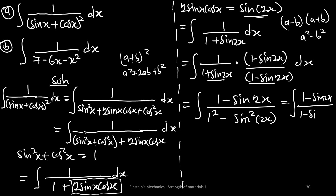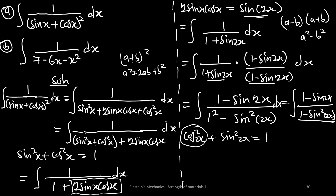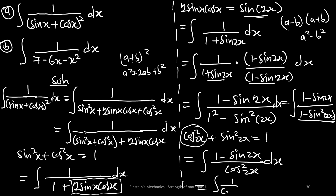We know that cos²2x + sin²2x = 1, so 1 − sin²2x = cos²2x. This gives us the integral of (1 − sin 2x) on cos²2x dx. We can split this as the integral of 1 on cos²2x minus sin 2x on cos²2x, all dx.